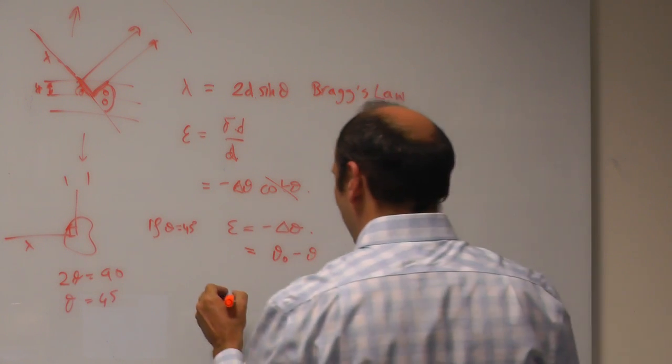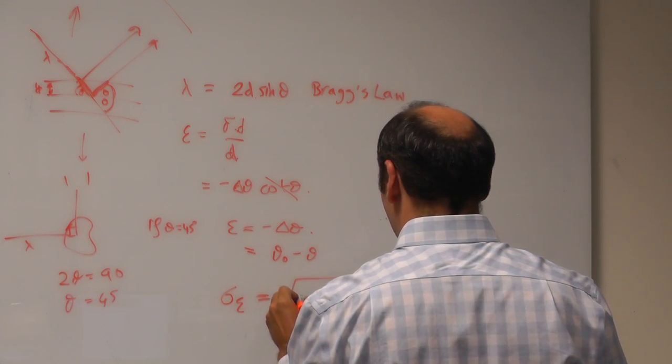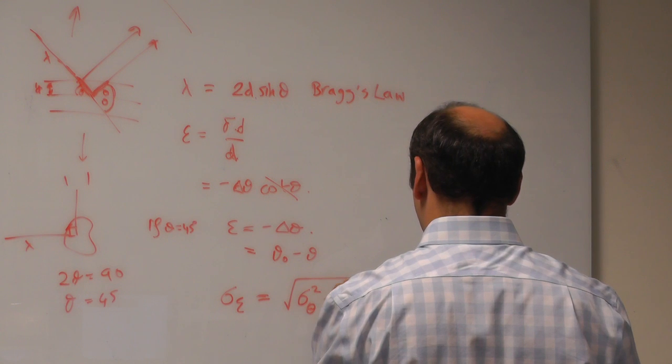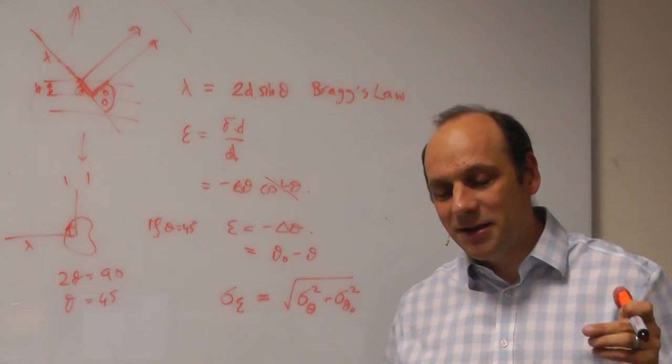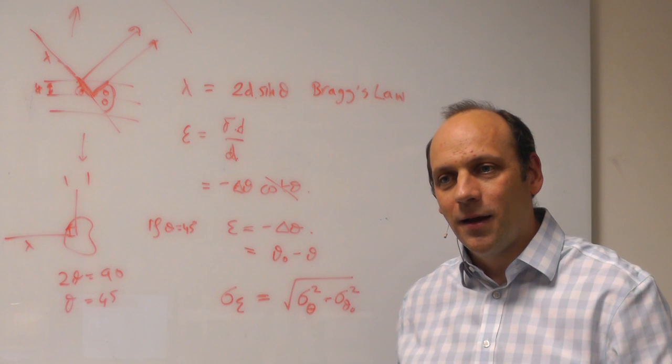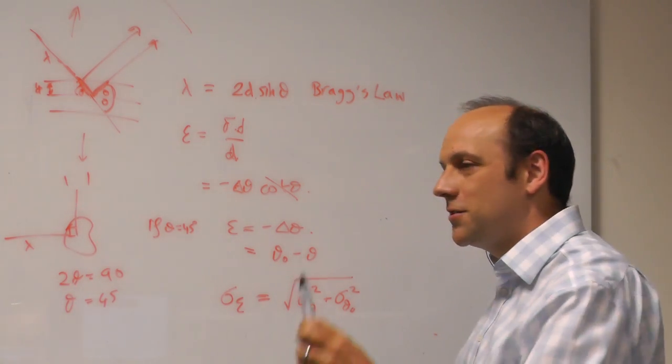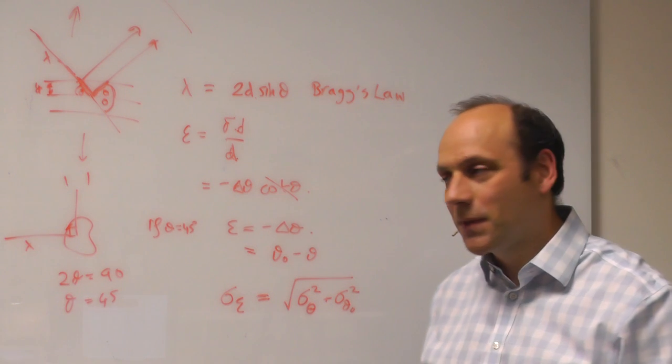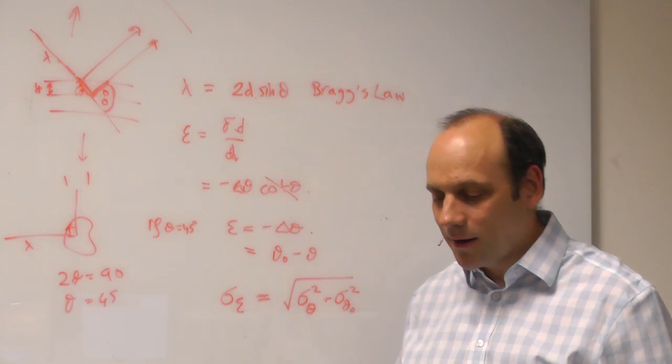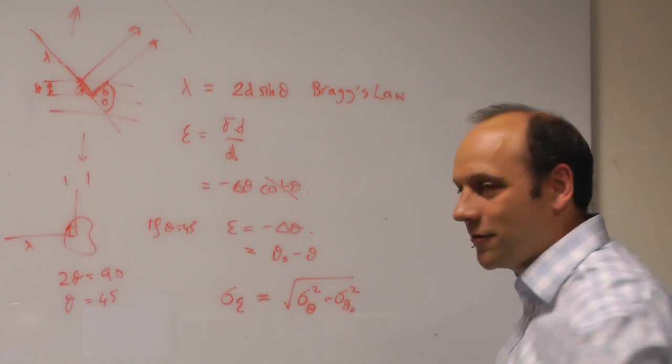So the uncertainty in the strain is then just given by, from our propagation of errors equation in the last lecture, the square root of the uncertainty in theta, our strained measurement squared, plus the uncertainty in theta 0 squared. So what that emphasizes is that we should expend as much experimental effort on measuring theta 0 as in measuring all of the points of different strains. We're aiming to map out a strain field, and we measure theta at lots of different positions in our sample. We should expend as much effort on theta 0 as we do on all the other measurements put together. And then these will be about the same size, and that will minimize the overall error in the problem.